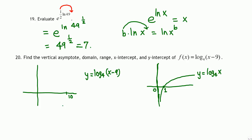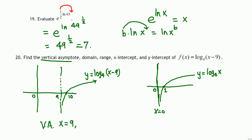The shifted graph has the same shape, but everything moves 9 units right, so the point at 0 shifts to 9. The original vertical asymptote was x = 0; since the graph is shifted 9 to the right, the new vertical asymptote is x = 9. So the vertical asymptote (VA) is x = 9.